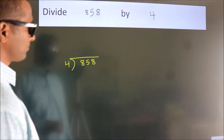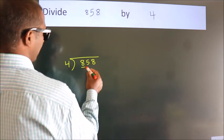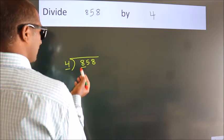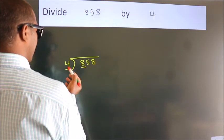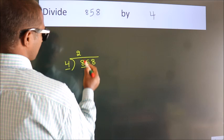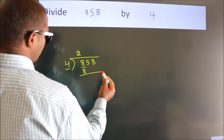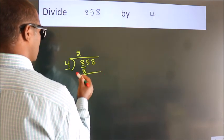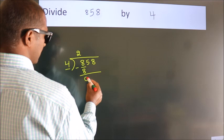Next, here we have 8, here 4. When do we get 8? In the 4 table, 4 twos are 8. Now we subtract and we get 0.